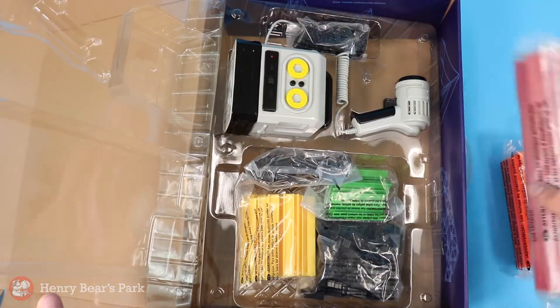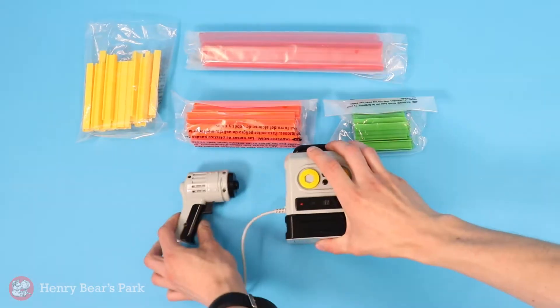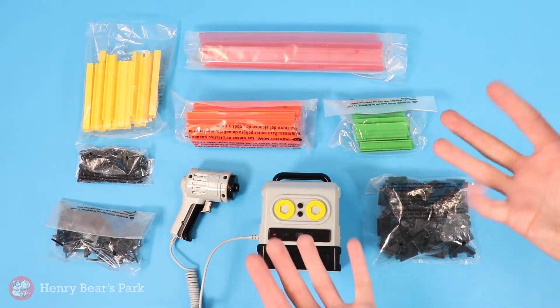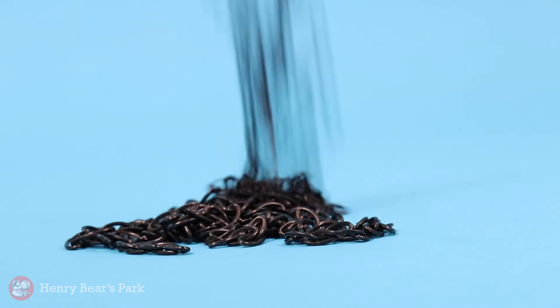Everything is nicely sorted by color and piece type. We have some building pieces here that are called beams, a drill, and some other miscellaneous parts like welding rods and chain pieces.